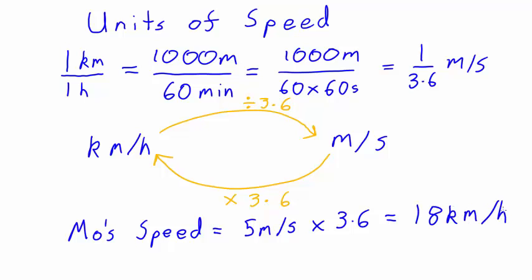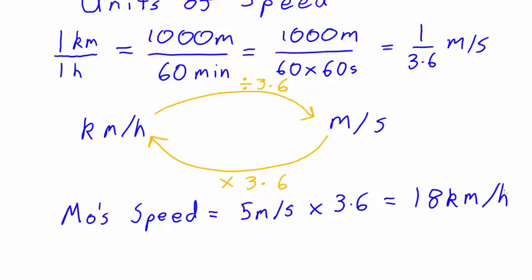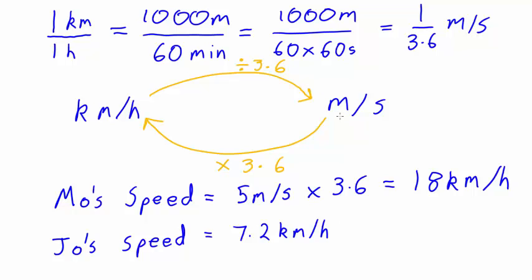Now let's imagine that Joe runs at 7.2 kilometres per hour. What is Joe's speed in metres per second? To go from kilometres per hour to metres per second, we need to divide by 3.6, and that gives us 2 metres per second.